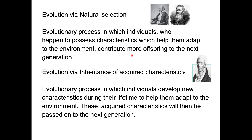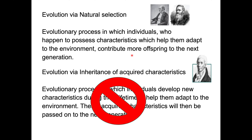Contrast that to what Lamarck proposed: an evolutionary process in which individuals develop new characteristics during their lifetime to help them adapt to the environment, and those acquired characteristics are then passed on to the next generation. This is wrong — that's not what happens.